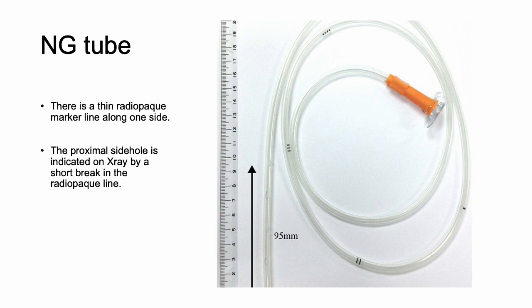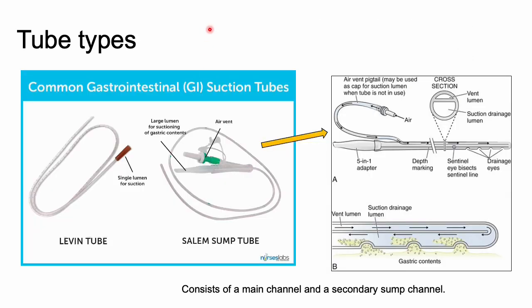There are two different tube types, and it's really important to know which type your institution uses. Most institutions use the Salem sump tube. The Levin tube is just like a normal tube — it's what most people think of when placing an NG tube: a single lumen tube used for suction.